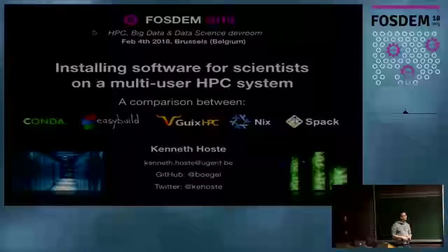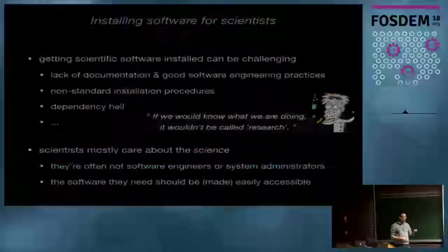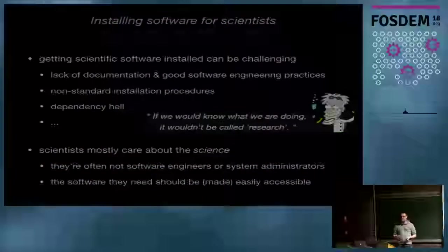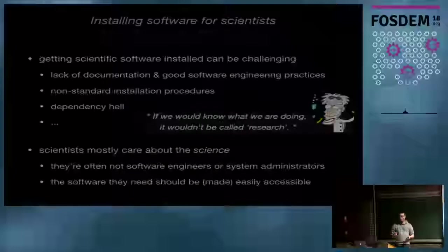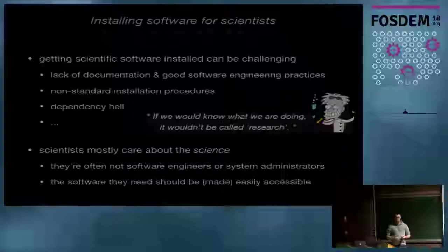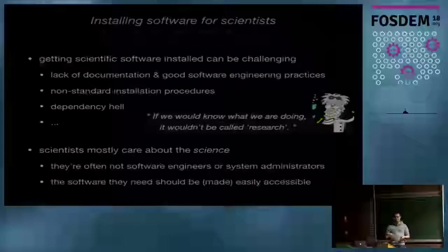What I want to do is compare five different tools to get scientific software installed on supercomputers — these multi-user, high-performance computing systems. I want to look at the title a bit: installing software for scientists can be quite challenging. Scientific software has its quirks. It's very different from normal FOSS software where you can just run configure, make, install, and it has a man page and everything is nicely documented. That's not the case with scientific software.